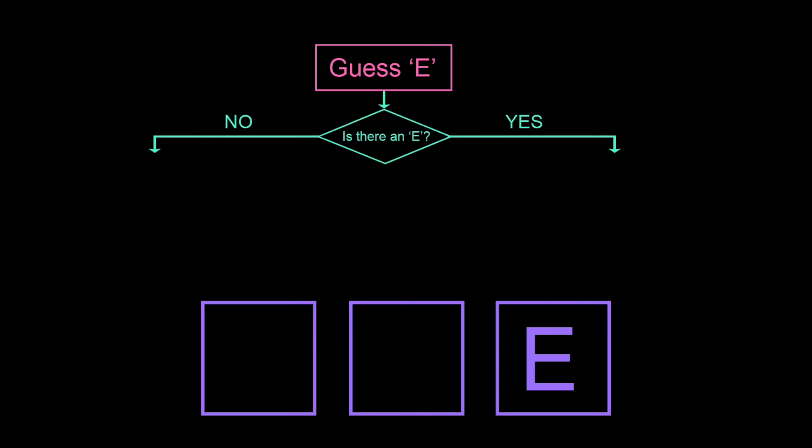If the answer is no, we want to keep trying to find the vowel, so we'll guess A. If the answer is yes, then the best letter to guess depends on whether that E is the first, second, or third letter of the word, so we make another selection.